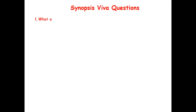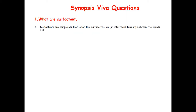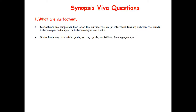Now we will move to the viva questions. First question: what are surfactants? Surfactants are compounds that lower the surface tension or interfacial tension between two liquids, between gas and liquid, or between liquid and solid. Surfactants may act as detergents, wetting agents, emulsifiers, foaming agents, and dispersants.